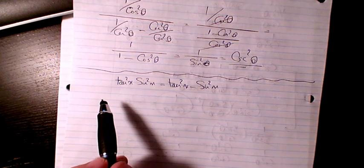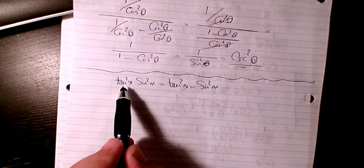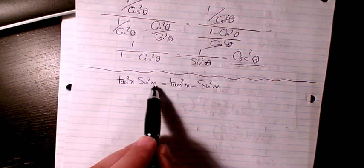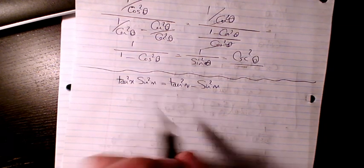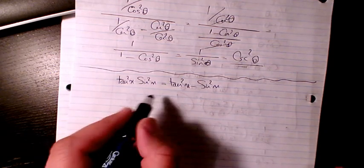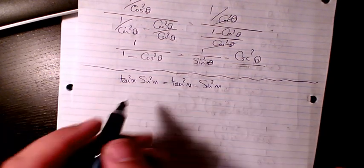In this example, I need to verify this trig identity. I have tan squared x sin squared x equals to tan squared x minus sin squared x. So it can start from right hand side or left hand side, doesn't really matter for this one.